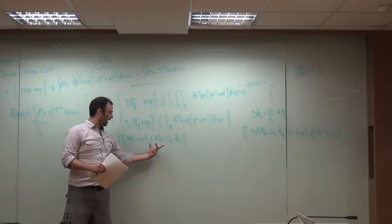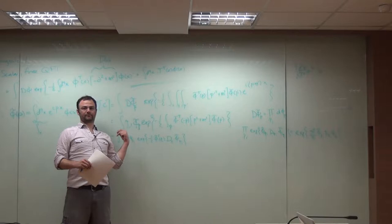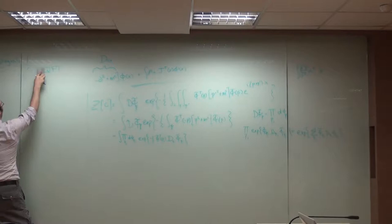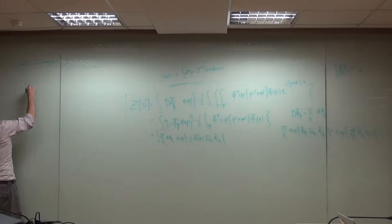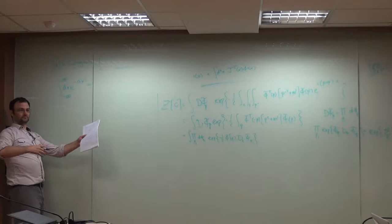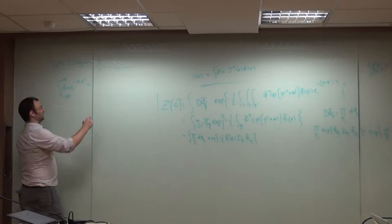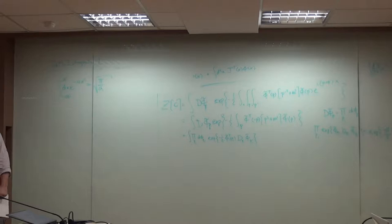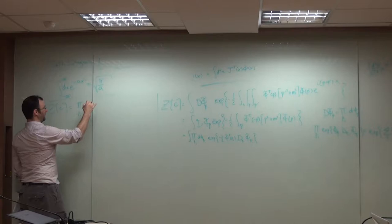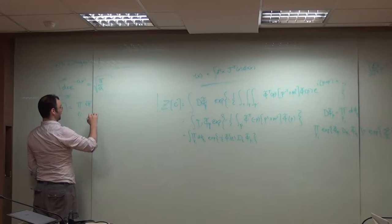But the point is, now I have this product of a bunch of independent Gaussian integrals. And I assume you guys remember how to do Gaussian integrals. If you don't, I'll just remind you very quickly. If you have an integral dx e to the minus ax squared from minus infinity to infinity, this equals square root of pi over a. That means we have the product of a bunch of square roots of pi, and then one over the square root of pi squared plus m squared.